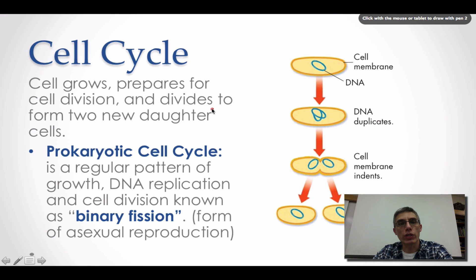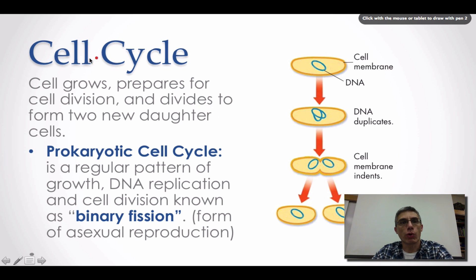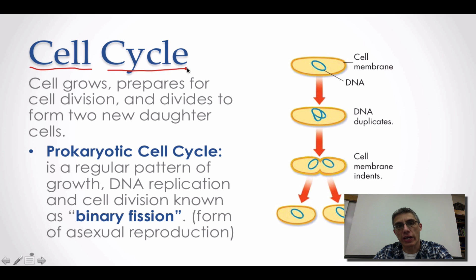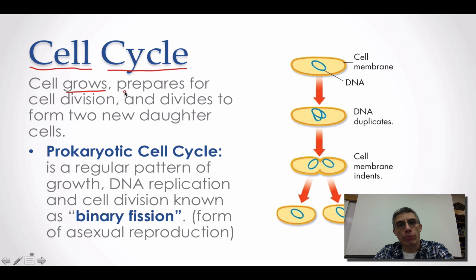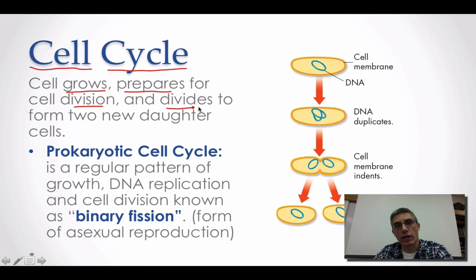Next, we need to look at what happens before the cell actually divides. We refer to that as the cell cycle, which typically involves cell growth, preparation for cell division — where any special parts necessary for division are produced — and eventually the division of the cell to produce two new daughter cells.